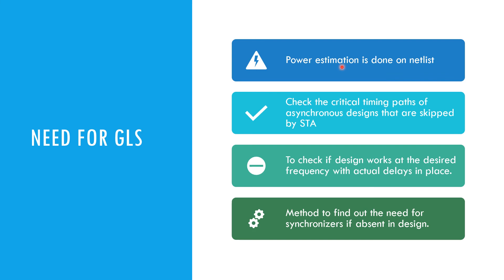Power estimation can only be done on a netlist, so you need a gate level simulation. Additionally, to check the critical timing paths of the asynchronous design — this cannot be checked by the STA and has to be checked in your gate level simulation.